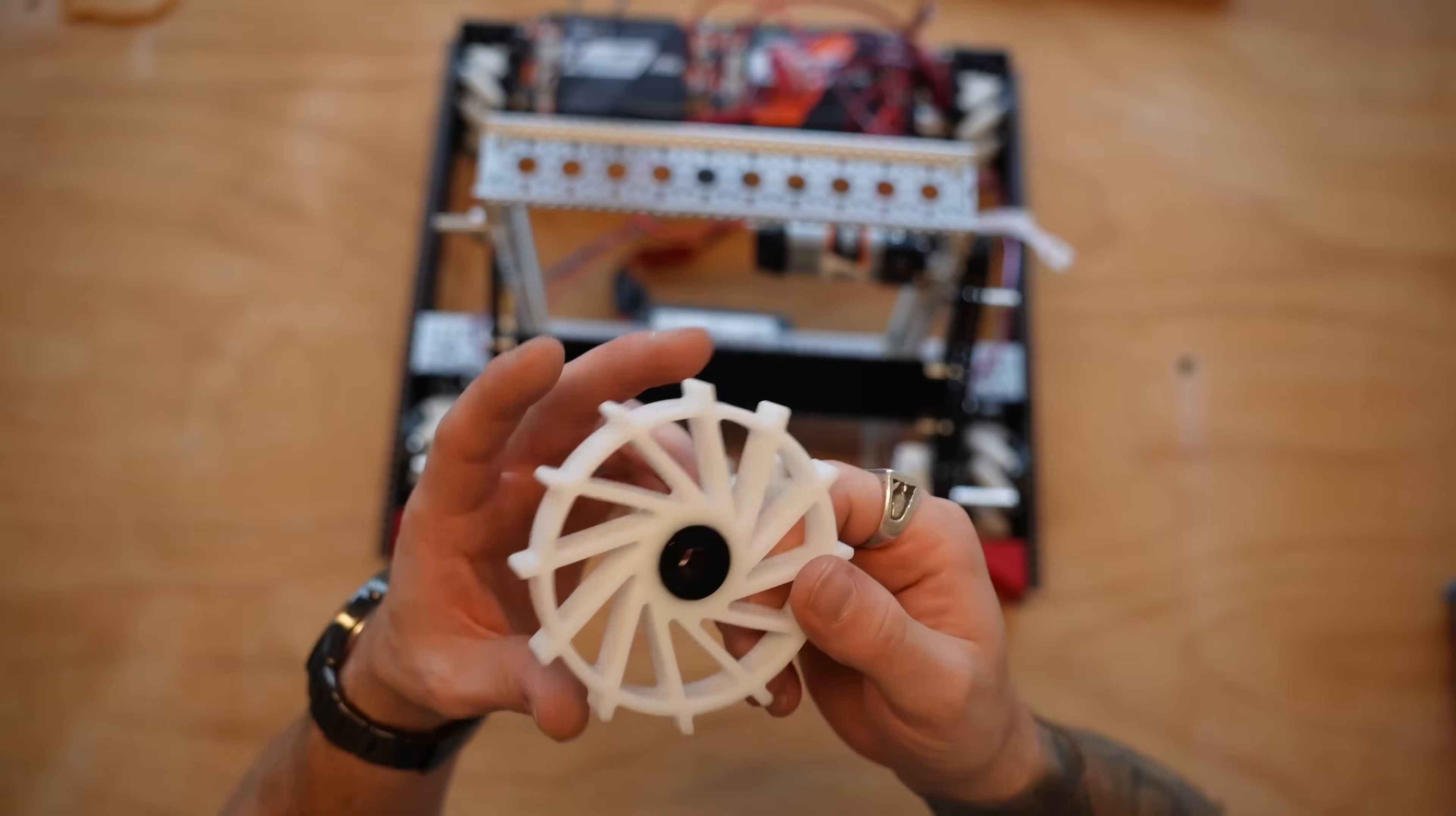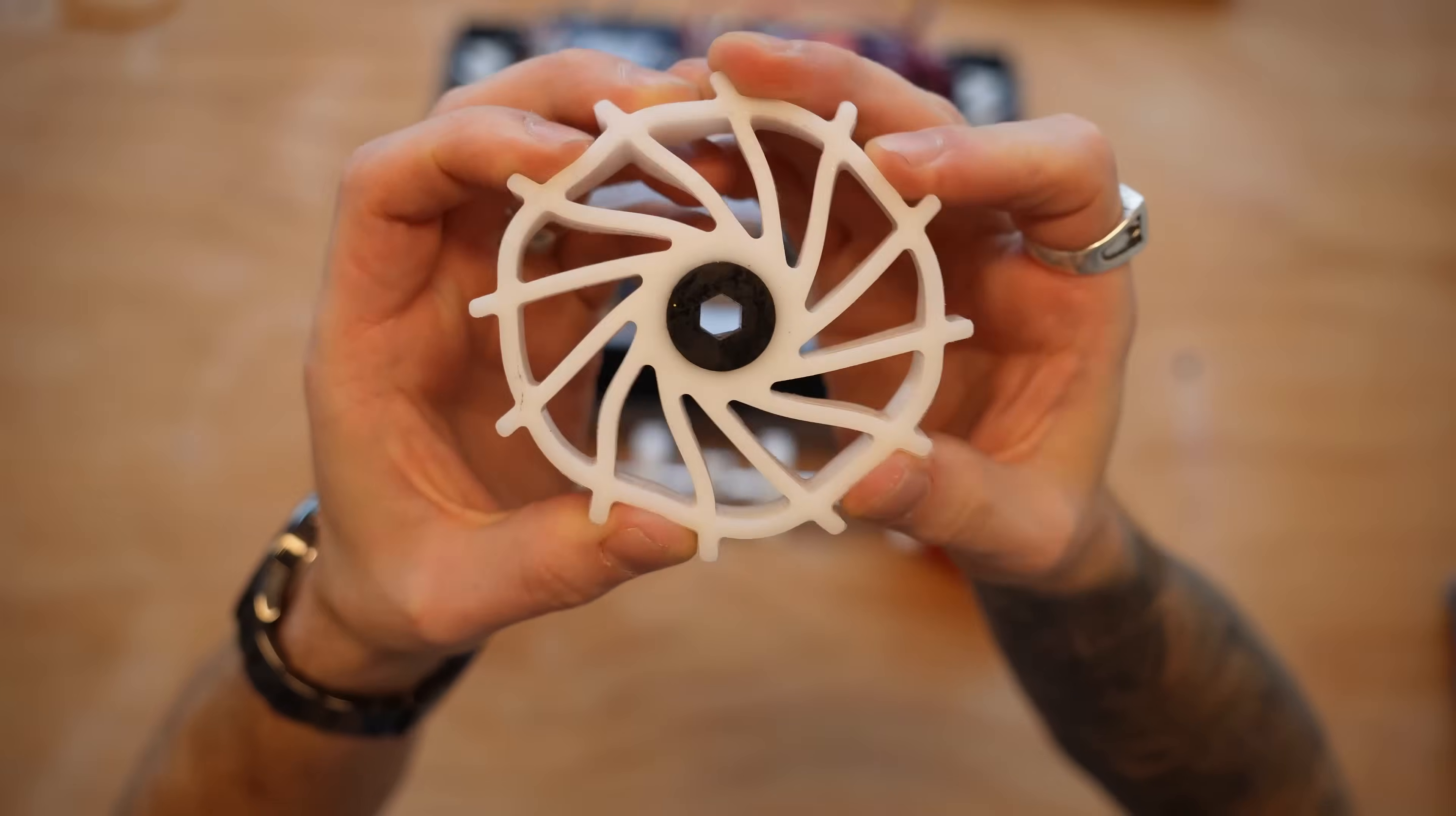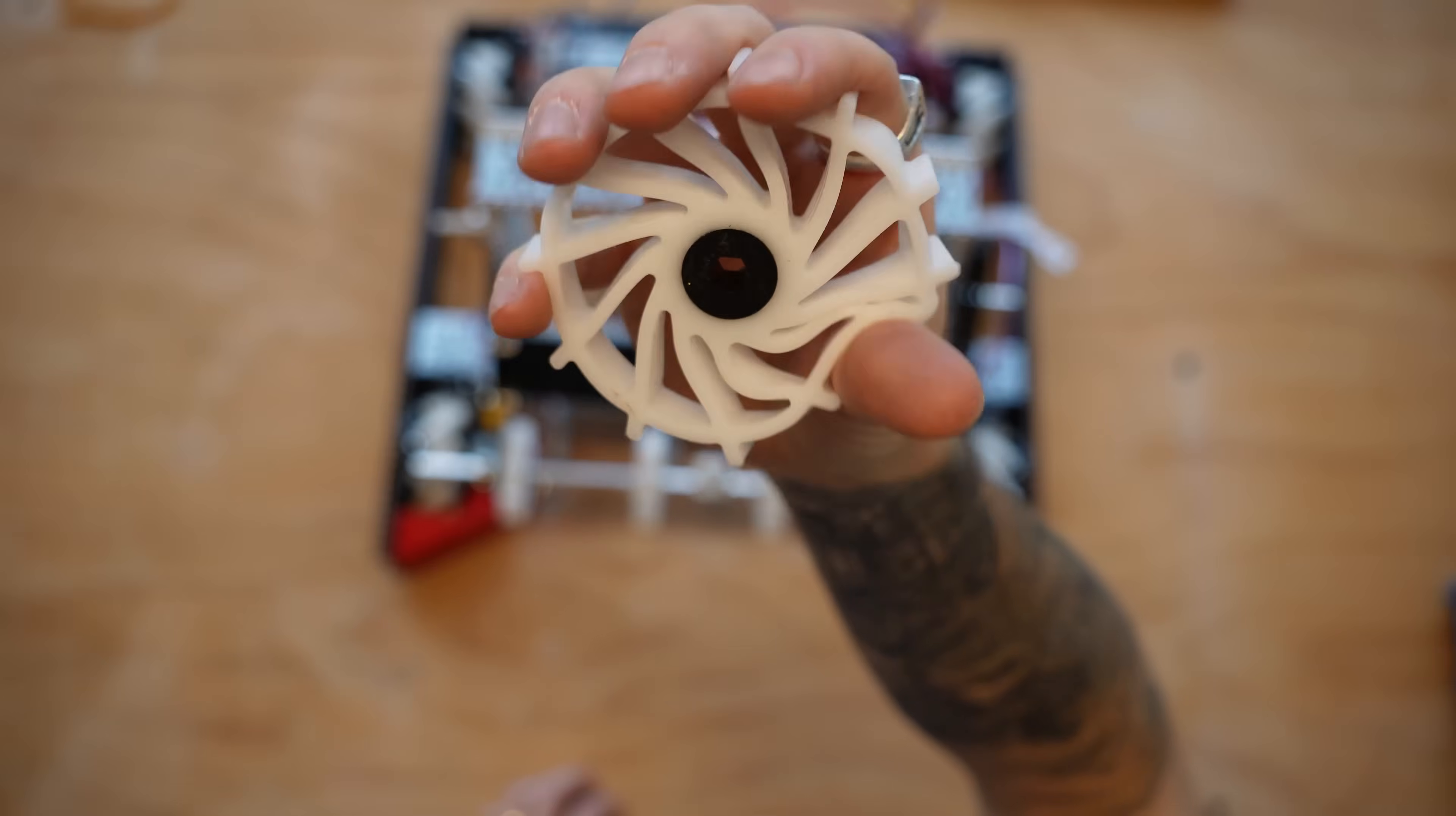So first things first, what exactly is a compliant wheel? All a compliant wheel is, it's effectively just a squishy wheel. That's what we in engineering call compliance, where there's just a little bit of extra give to that system.